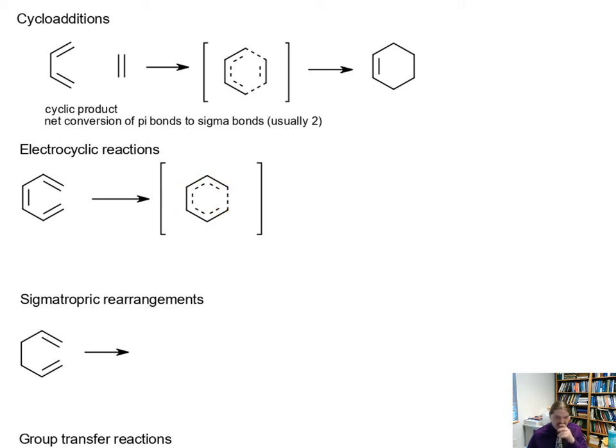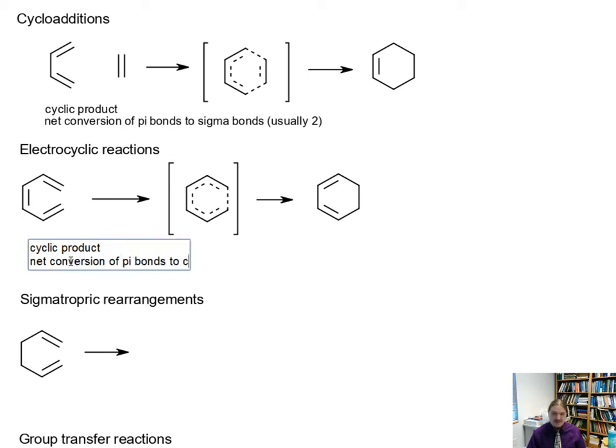In these transition states that I am drawing, the dashed lines represent partially formed and partially broken bonds. It's really a rearrangement of the pi electrons in most of these reactions. An electrocyclic reaction forms a cyclic product, but it's not an addition reaction—there's only one reactant. Electrocyclic reactions also have a net conversion of pi bonds to sigma bonds. Usually, like in this case, we're converting one pi bond into one sigma bond. If you count them up, there are five sigma bonds and three pi bonds in the reactant, and the product has six sigma bonds and two pi bonds.